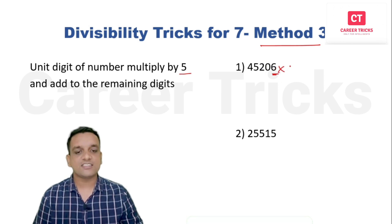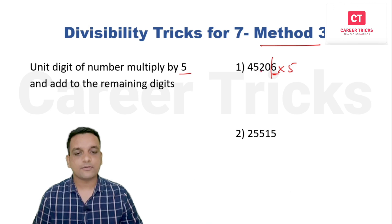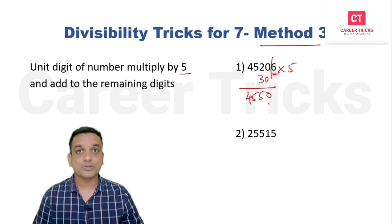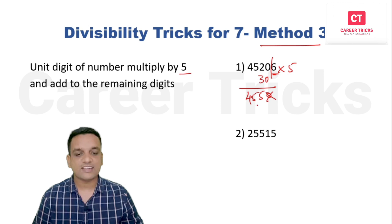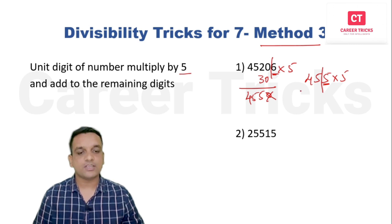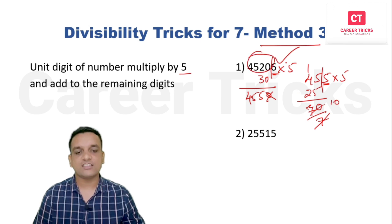For the first problem using method three, the unit digit is 6 (from 4 5 2 0 6). Multiply 6 by 5 = 30. Add 30 to remaining digits 4520: we get 4550. Unit digit is 0 — we neglect it and take 455. Unit digit 5, multiply by 5 = 25. Add 25 to remaining 45: 45 + 25 = 70. Since 70 is divisible by seven, this number is divisible by seven.